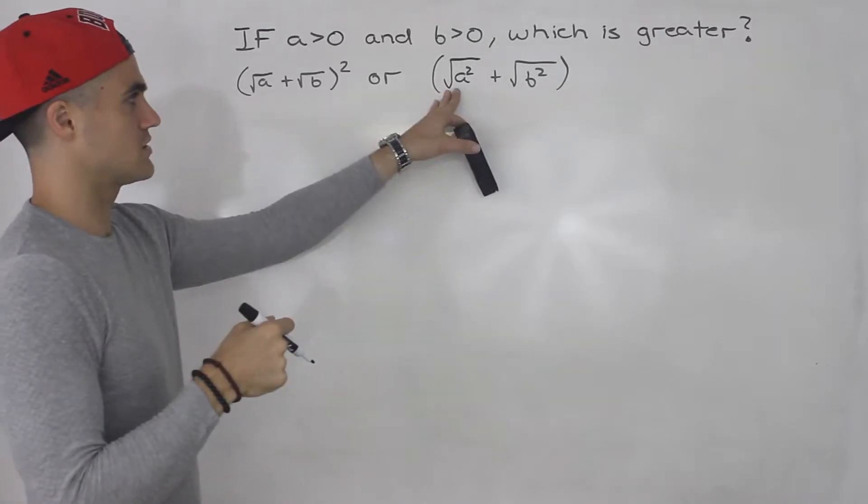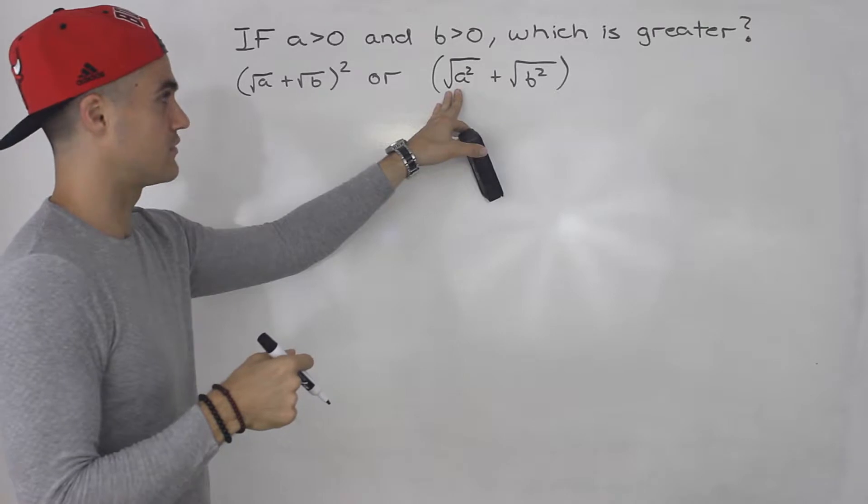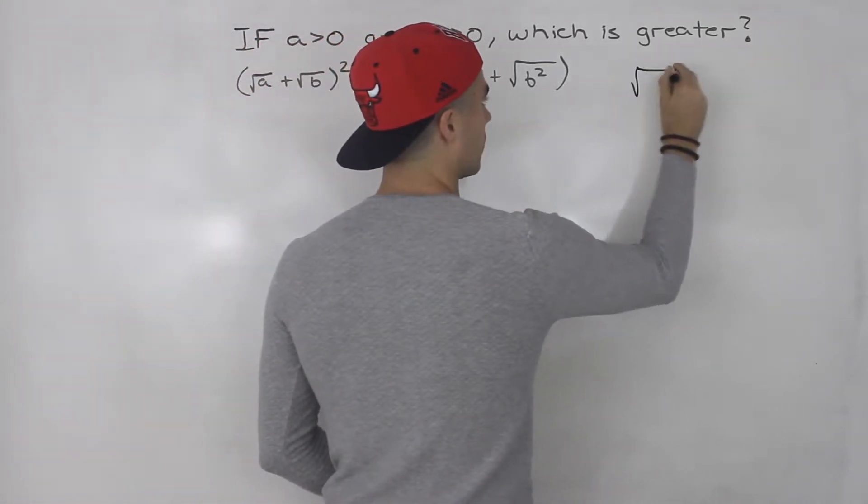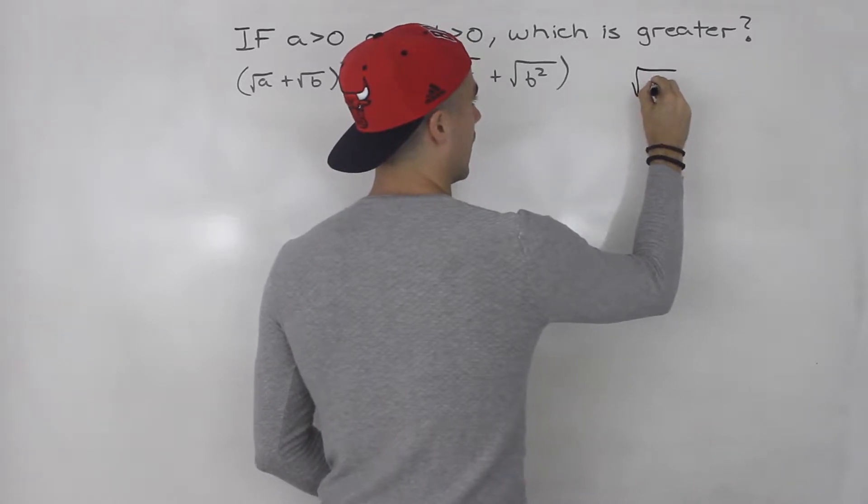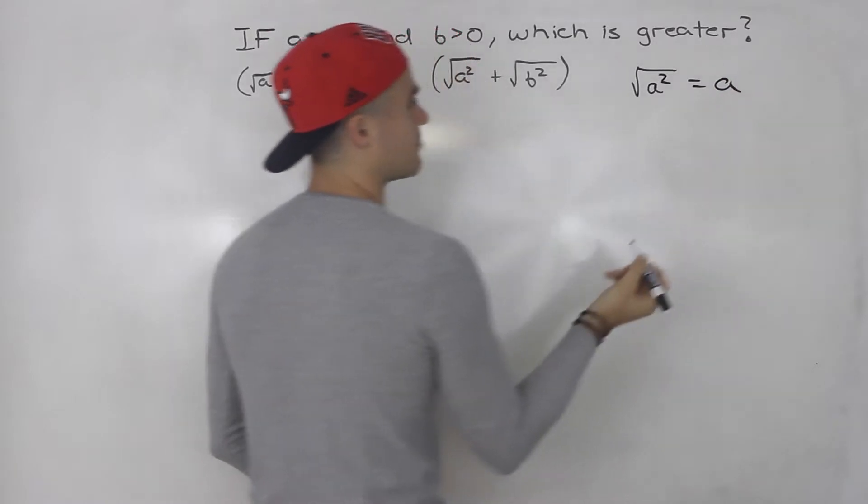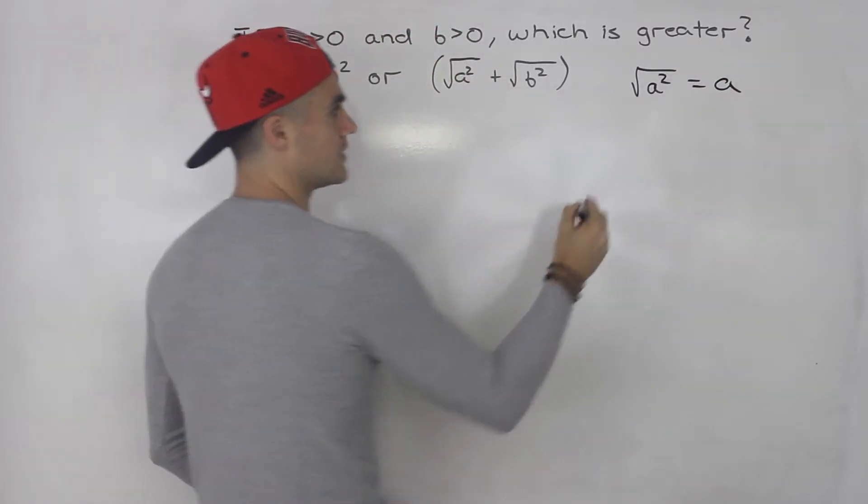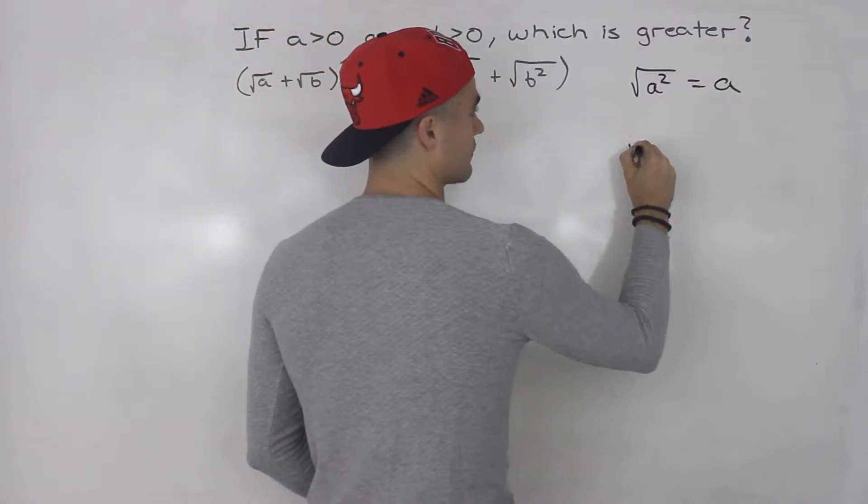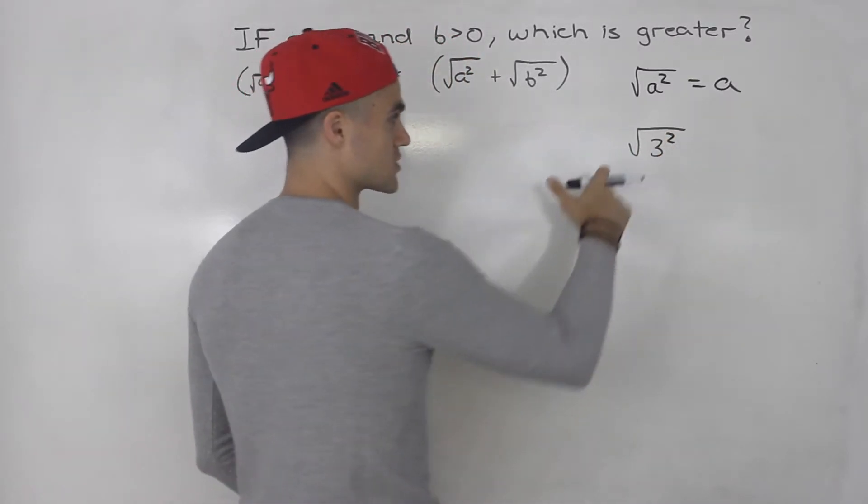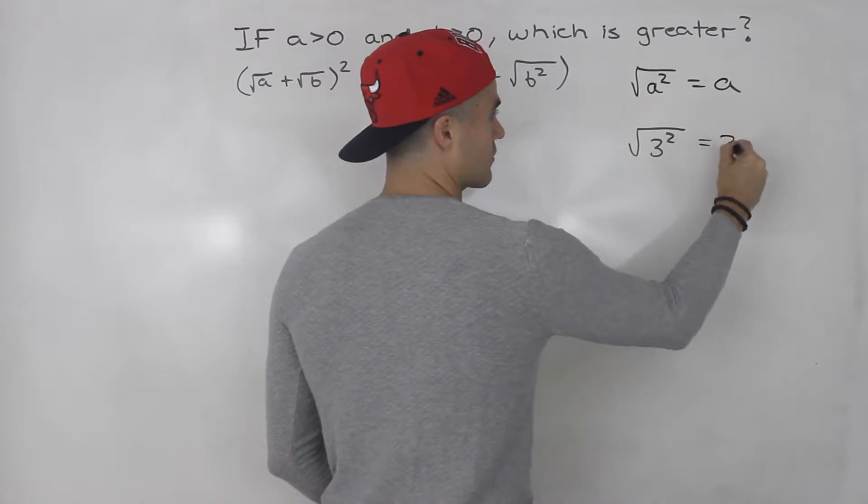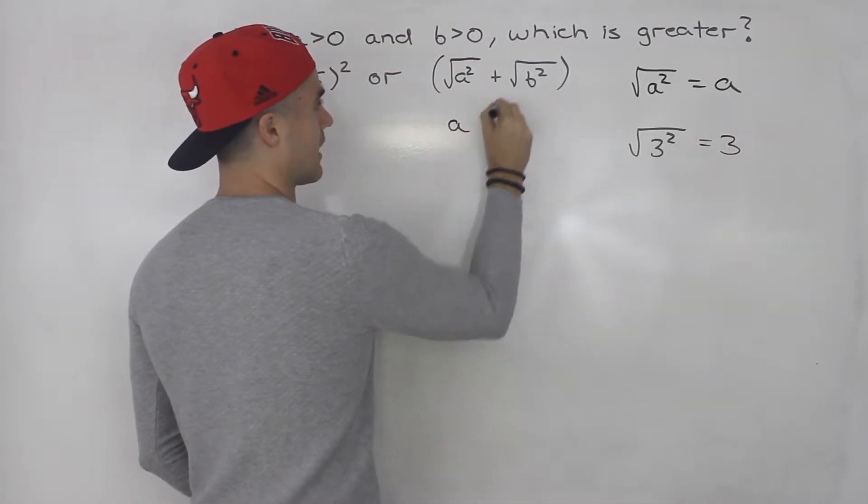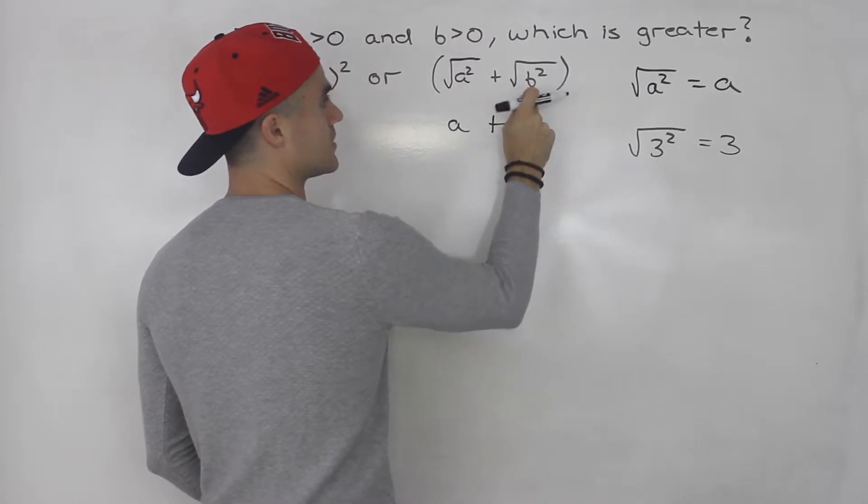Now notice this expression is very simple to simplify because we know in general the square root of something squared is just equal to whatever that base is. So you could even see this with numbers. If we have like the square root of three squared, well three squared is nine and the square root of nine is three. So we know this is going to be a and then this is going to be b.